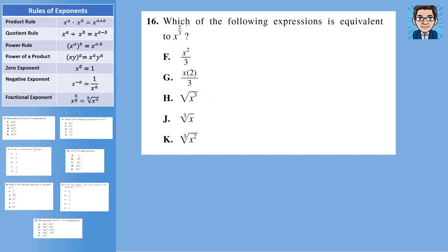On the fifth problem, it's asking what x to the two-thirds is equivalent to. Applying the fractional exponent rule, the denominator is our root — so we take the cube root — and the numerator is our power, so we raise to the second power. That gives us the cube root of x squared, making K our answer. You could also write it as the cube root of x, all raised to the second power — both forms are valid.